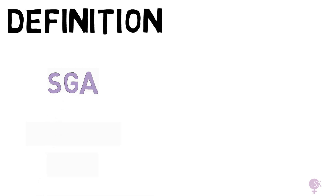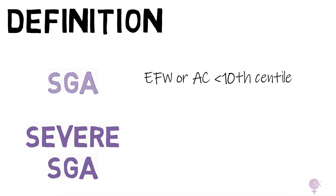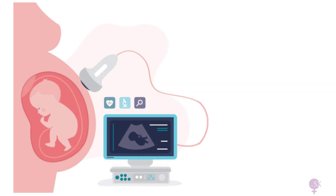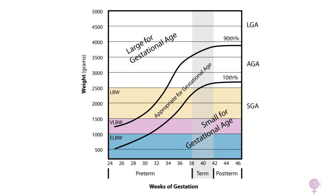Starting off with some definitions. How do we define an SGA baby? We define it as an estimated fetal weight or abdominal circumference less than the 10th centile. We define severe SGA as an EFW or AC less than the 3rd centile. These acronyms refer to ultrasound measurements — the abdominal circumference and the estimated fetal weight — which are automatically plotted on a centile chart, comparing that measurement to a similar population at the same gestational age. The line at the bottom of the chart denotes the 10th percentile; therefore, all babies lying below this line are defined as SGA babies.